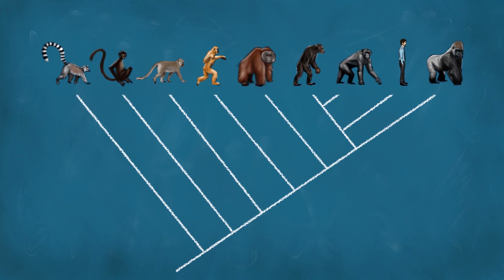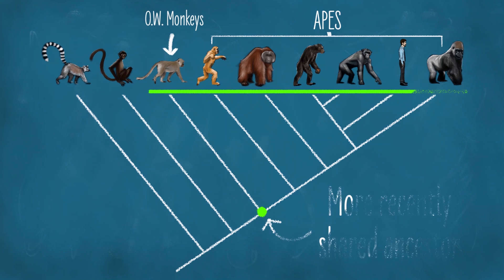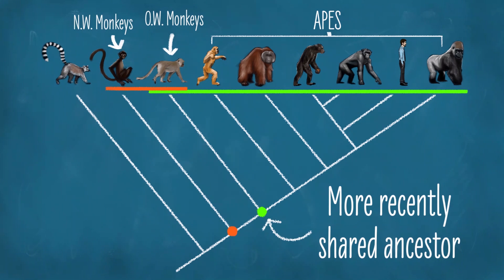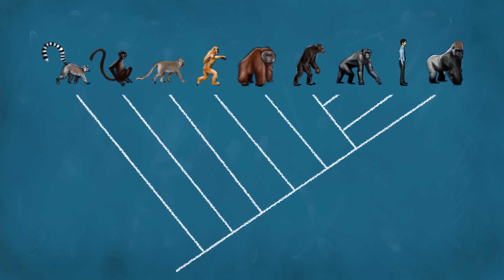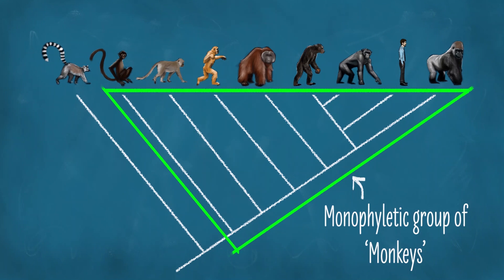For starters, I want to point out something very important. Based on this diagram, which represents our current understanding of the evolutionary relationships of primates, we can see that New World monkeys, Old World monkeys, and apes — including humans and chimpanzees — all share ancestors. Old World monkeys are actually more closely related to apes than they are to New World monkeys.